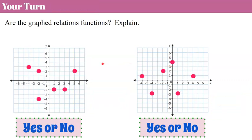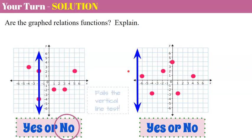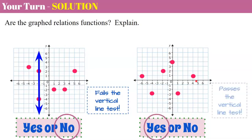Let's try another one. Determine whether these graphed relations are functions — pause the video and come back when you're ready. Welcome back. Using the vertical line test on the first graph: when I pass my vertical line over, it passes through two points, so it fails the vertical line test and this relation is not a function. Now the second graph: as the vertical line travels across, it only ever passes through one point at a time. So it passes the vertical line test and it is a function.